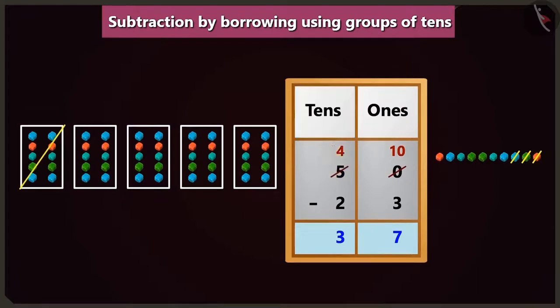Oh, yes. You are right, Choo Choo. So, here if we subtract one ten from five tens in the box of tens, then it will be four tens. Yes. If we subtract two tens from four tens, then we will be left with two tens.